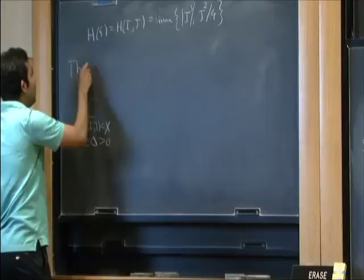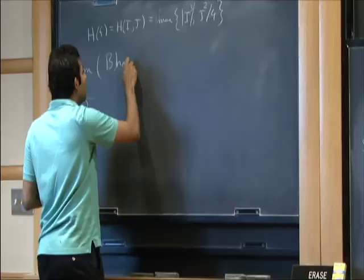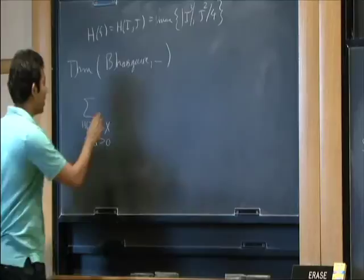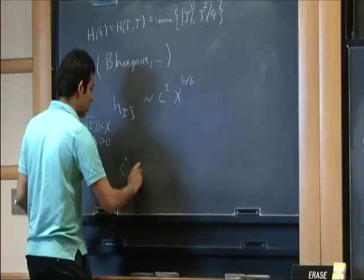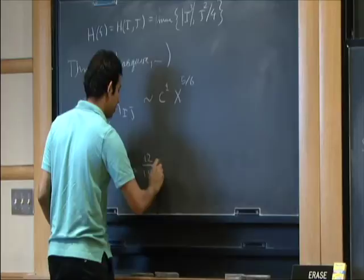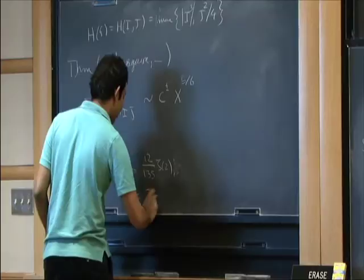My advisor Manjul Bhargava and I show that this quantity grows like a constant times x^(5/6), where in the positive discriminant case this constant turns out to be 12/(135ζ(2)). In the negative discriminant case it's 32/(135ζ(2)).